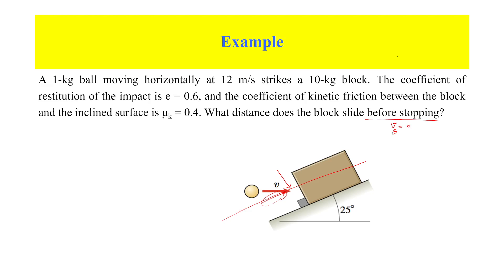I resolve the velocity of the ball — this angle is 25 degrees, so this component of the velocity is V_B cosine 25. The initial velocity of the ball is 12 meters per second, so the component along the incline is 12 cosine 25. This is the only component of the ball we are using.